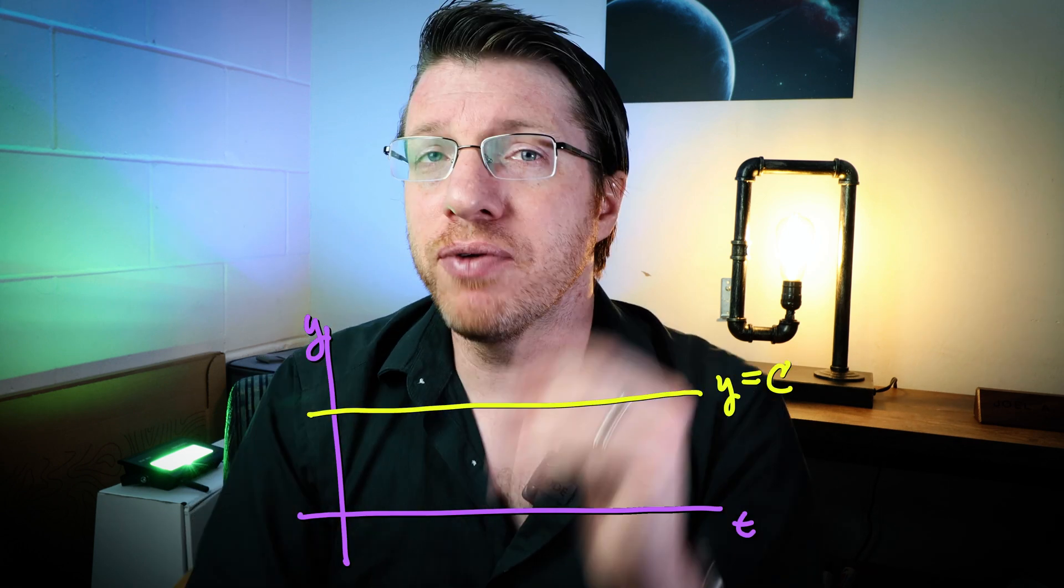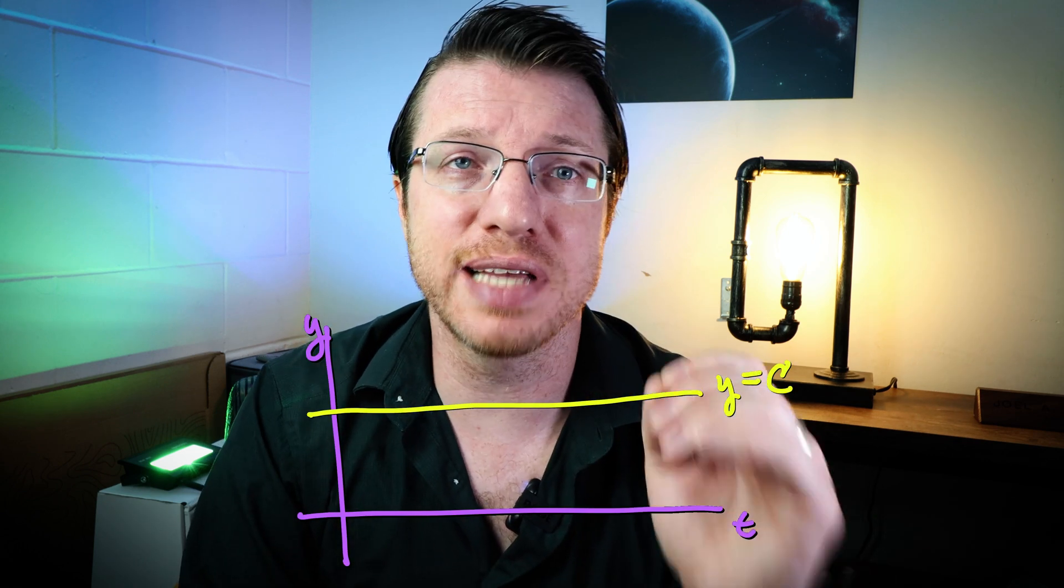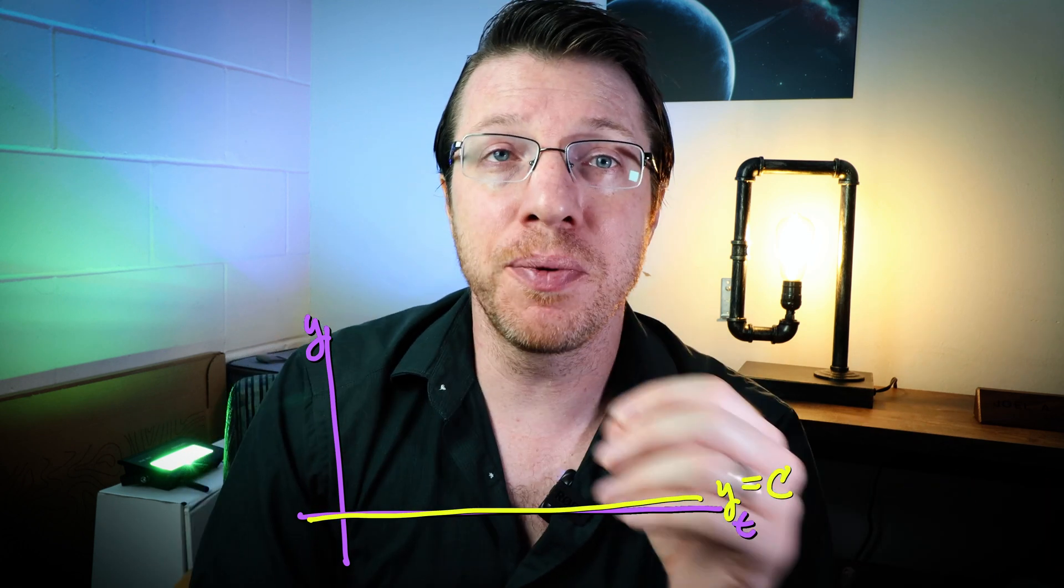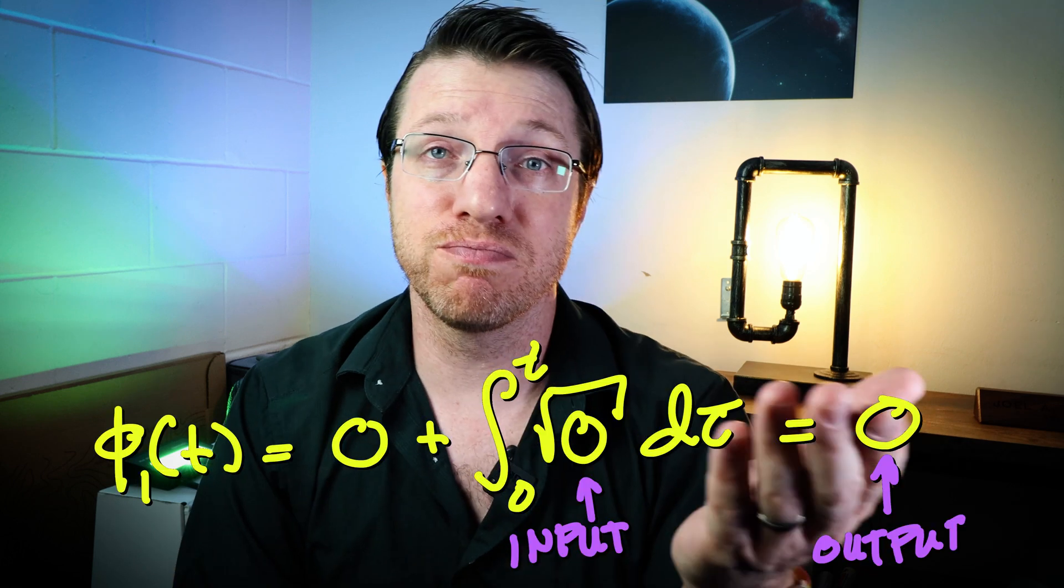So people just typically start with the simplest function you can actually do, and that is a constant function. If we do that here, then the constant function satisfies our initial condition of y(0) equals 0. Well, that's the 0 function. If we put that into our Picard's iteration, we get 0 back again,